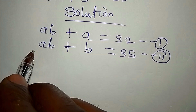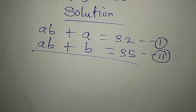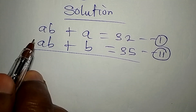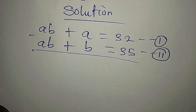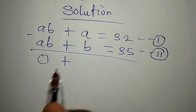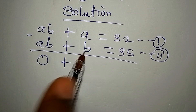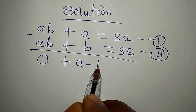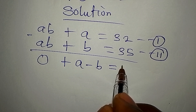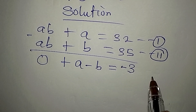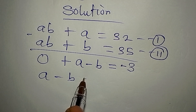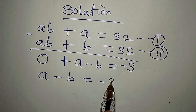We can use the elimination method already, because we have AB and AB here. When the signs are the same we can subtract, so AB minus AB gives zero, and A minus B equals 32 minus 35, which gives us minus 3. So A minus B equals minus 3.